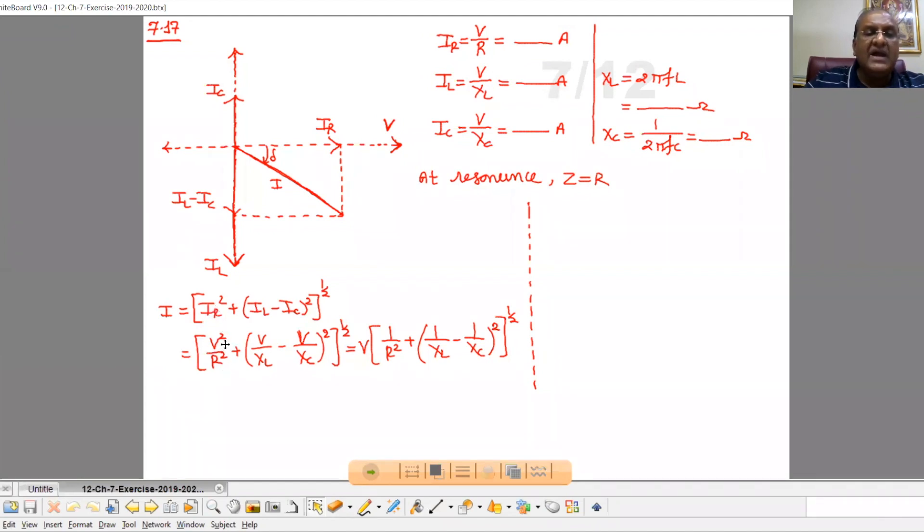Now we can substitute IR = V/R, so V²/R². IL = V/XL, and IC = V/XC. Substitute all values, take V common and take it outside the bracket. So we can write I = V × √[1/R² + (1/XL - 1/XC)²].